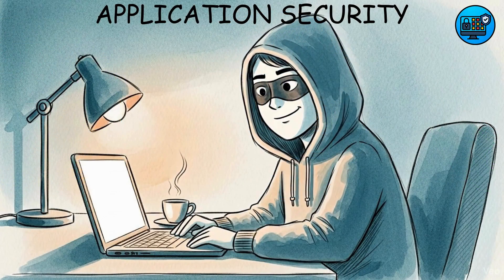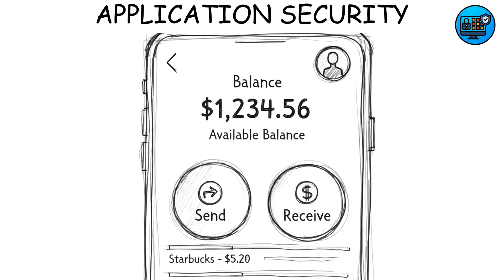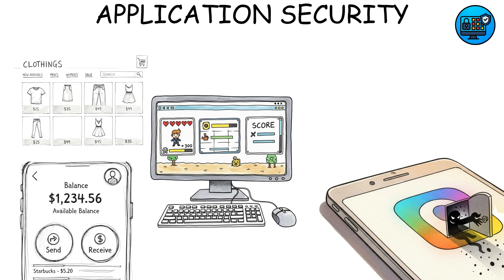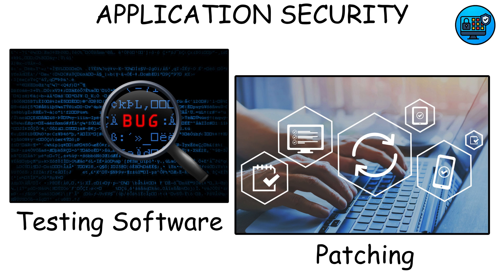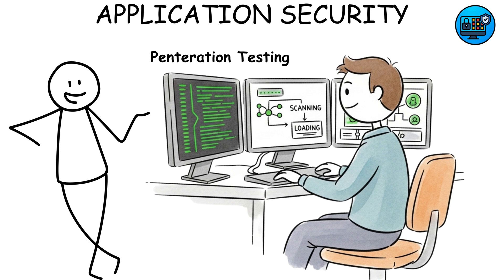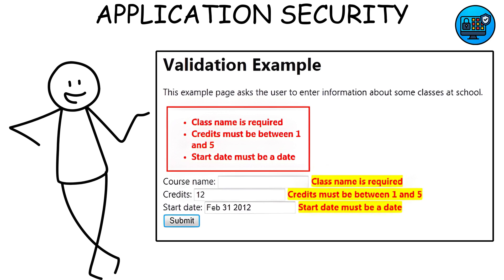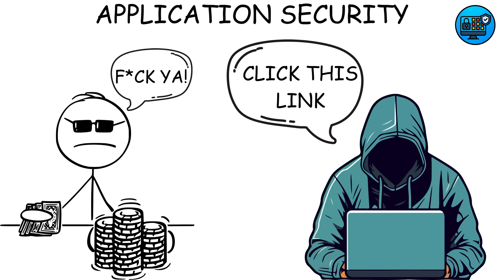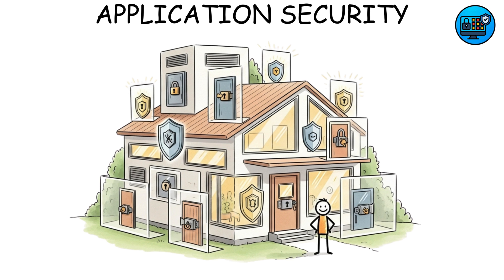Application security. This is where hackers get clever. Applications like websites, banking apps, or even games can have secret back doors. Application security means testing and patching these holes before hackers find them. Techniques like penetration testing, code audits, and input validation keep the bad guys out. Think of it like securing a house not just from the front door, but every window and vent.